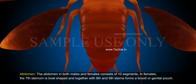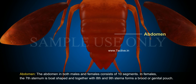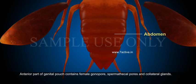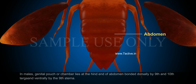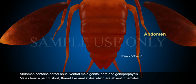Abdomen. The abdomen in both males and females consists of ten segments. In females, the seventh sternum is boat-shaped and together with the eighth and ninth sterna forms a brood or genital pouch. The anterior part of the genital pouch contains the female gonopore, spermathecal pores and collateral glands. In males, the genital pouch or chamber lies at the hind end of the abdomen, bounded dorsally by the ninth and tenth terga and ventrally by the ninth sterna. The abdomen contains a dorsal anus, ventral male genital pore and gonopophyses.